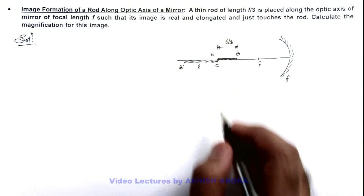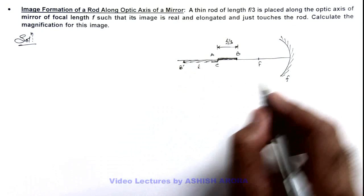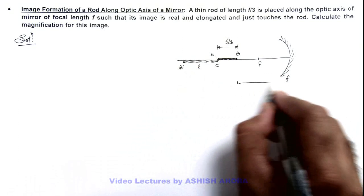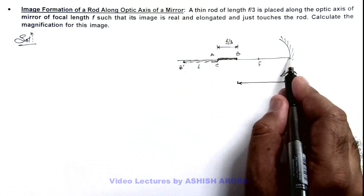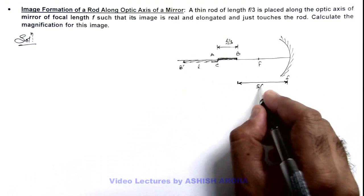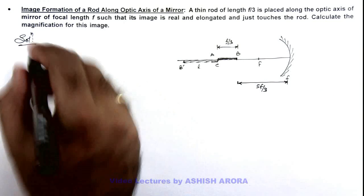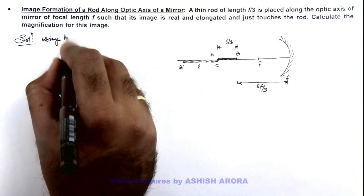In this situation for this point B we can find out its image at B dash. And the distance of point B from the pole of mirror we can calculate as: this is focal length f and this is 2f by 3 so this will be 5f by 3. So here we can find out the image of point B by using mirror formula.